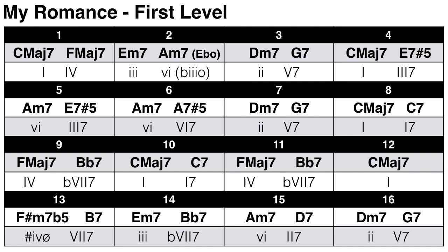The song begins on the one chord, followed by the four chord, then the minor three and the minor six — or if you like, the flat three diminished. Then we have a 2-5-1, followed by a three dominant to the six, three dominant again, six, then six dominant to a 2-5-1 again. Then the one dominant to the four, a flat-seven dominant to the one, and on the last line the sharp-four half-diminished, a seven dominant, a minor three, flat-seven dominant, a minor six, a two dominant, a two, and a five.